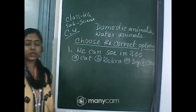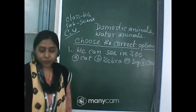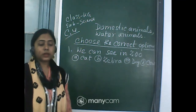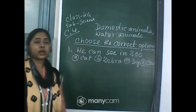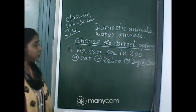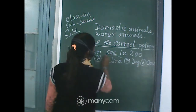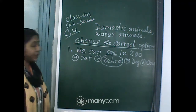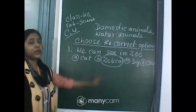Very good — Oshmita, Rudraditya, Prithviraj, Saanshtita, Shohaddo, Tathagato — your answers are correct. The correct option is B: Zebra. We can see a zebra in the zoo. Very good, Sree John and Shoshmit!